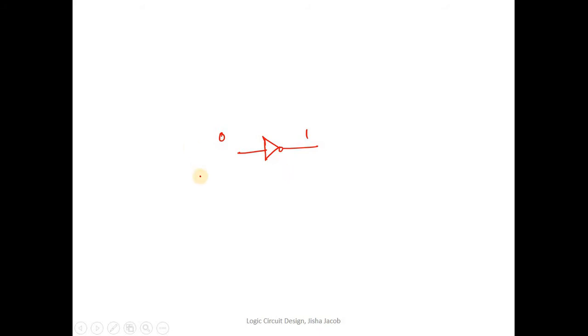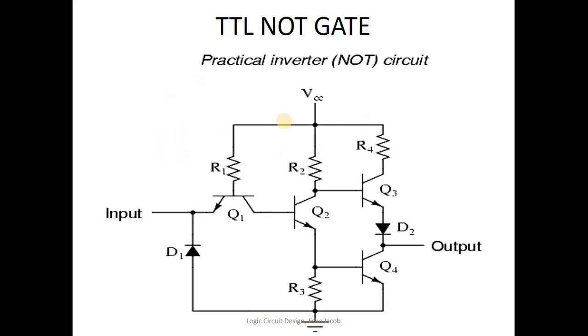Logic zero corresponds to a low voltage. If I'm talking about TTL, low voltage would be zero volts and high voltage would be five volts. So in this manner, we expect the operation of the TTL NOT gate.